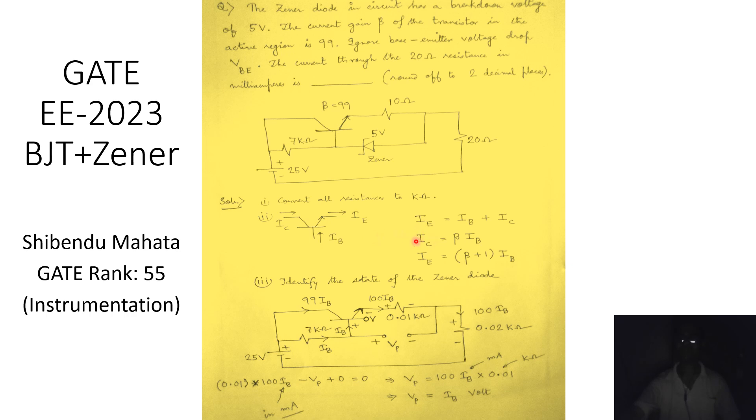Next, we revisit our knowledge of current flow through a bipolar junction transistor. The emitter current ie equals the sum of base current ib and collector current ic. We also know that ic equals beta times ib, where beta is the current gain. Therefore, ie equals (1 + beta) times ib.